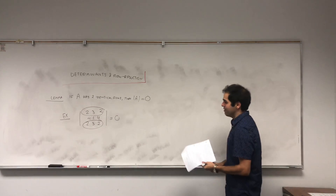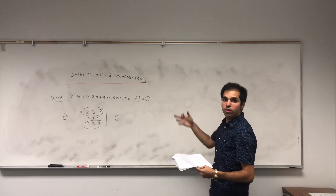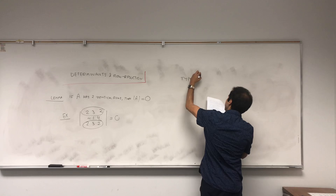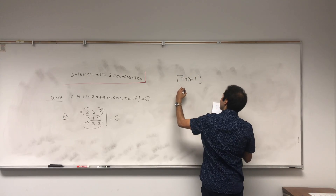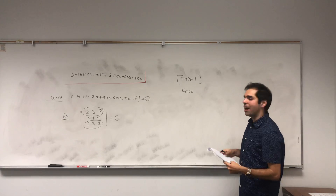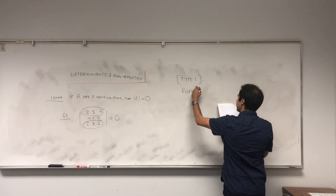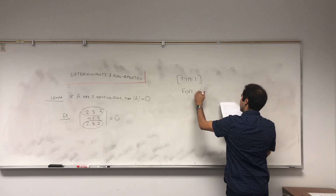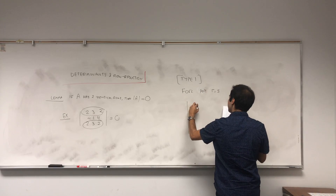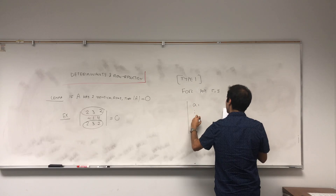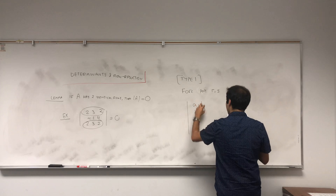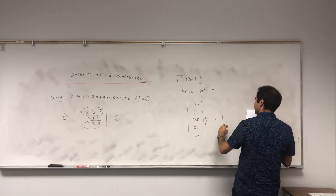Now let me show you what row reduction does. For type 1 elementary row operations, it's true that if you interchange any two rows, then you get minus the original determinant. So for any rows R and S, if you take the determinant of the matrix with rows AR and AS switched, you get minus the original.